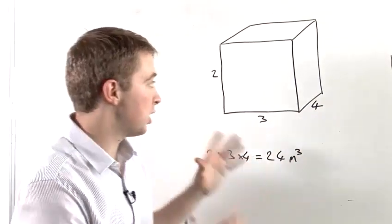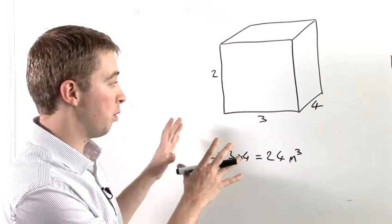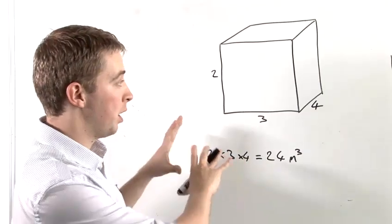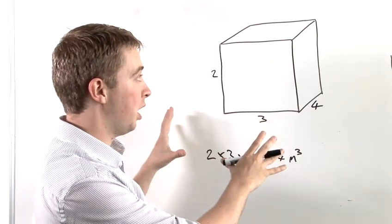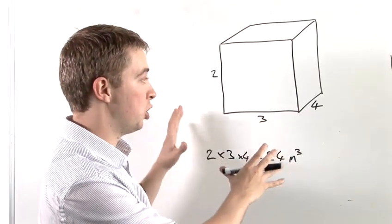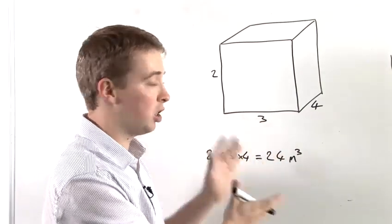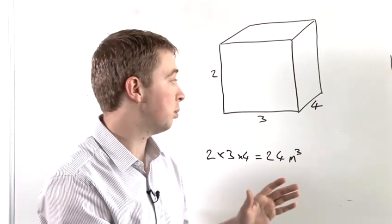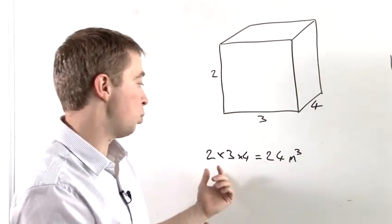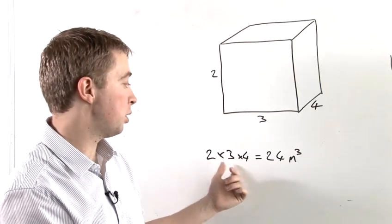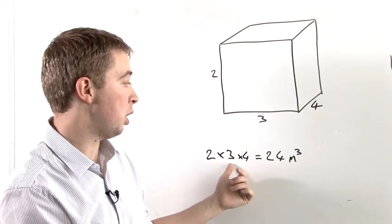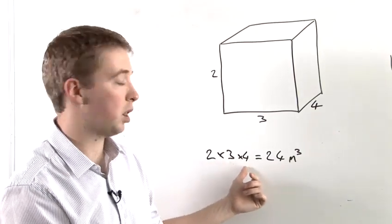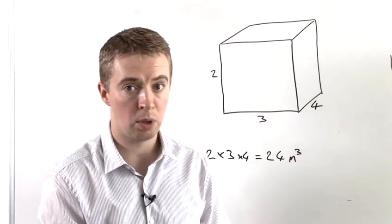And that's how to work out the volume of any shape which essentially is a cuboid. You just have to multiply the height by the width by the depth.